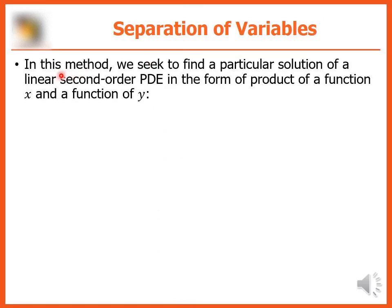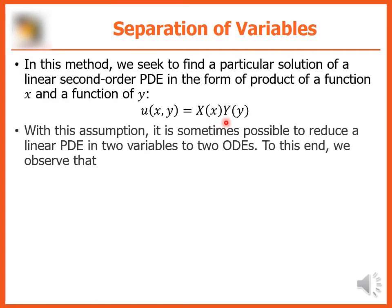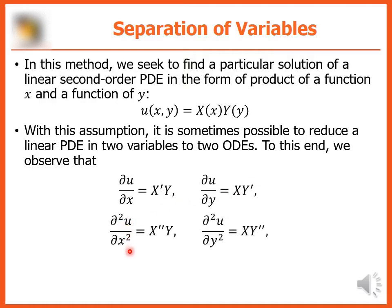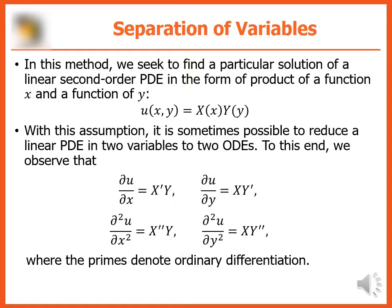Separation of variables: in this method, we seek a particular solution of a linear second-order PDE in the form of a product of a function X and a function Y, so u equals X times Y. With this assumption, it is sometimes possible to reduce a linear PDE in two variables to two ODEs. The partial derivatives are: u_x equals X′Y, u_y equals XY′, u_xx equals X″Y, and u_yy equals XY″, where primes denote ordinary differentiation.